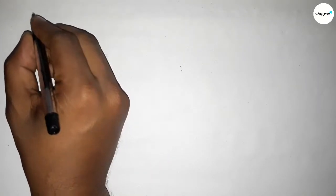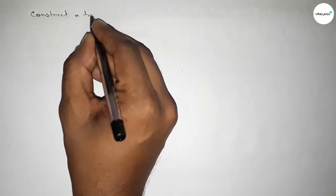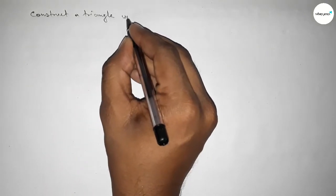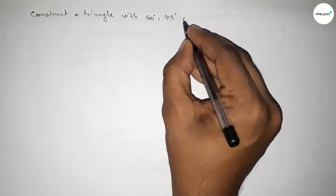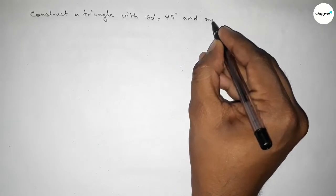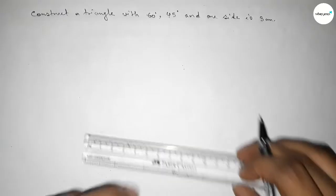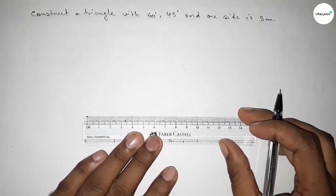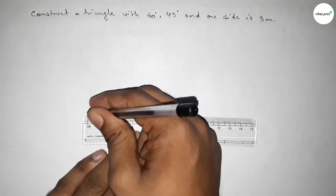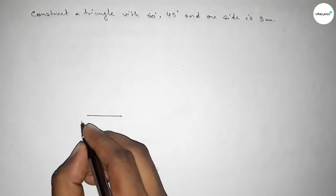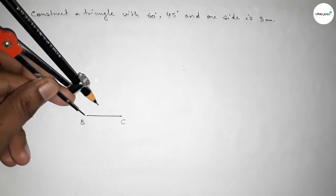Hi everyone, welcome to SISR classes. Today in this video we have to construct a triangle with two angles, 60 degree and 45 degree, and one given side of three centimeter. First of all, we have to draw a line of length three centimeter. Taking here point B and here point C.